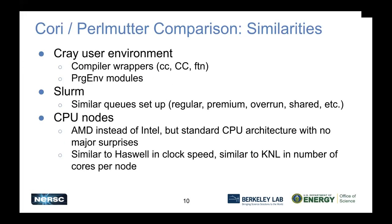A few similarities between CORI and Perlmutter: the user environment is pretty similar. We also use PrgEnv modules and compiler wrappers to build applications — you'll hear more in the next CPU talk. We also use Slurm, and Perlmutter has very similar queues: regular, premium, overrun, shared, etc., especially on CPU. Shared is only available on CPU. The CPU compute nodes are AMD instead of Intel, but with very similar CPU architecture — a new memory domain — and a different number of domains, but very similar architectures with no major surprises, and similar clock speed and number of cores per node as Haswell.